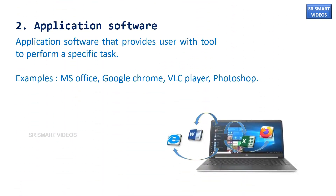Application software provides users with tools to perform a specific task. Some examples of application software are MS Office, Google Chrome, VLC Player, and Photoshop.